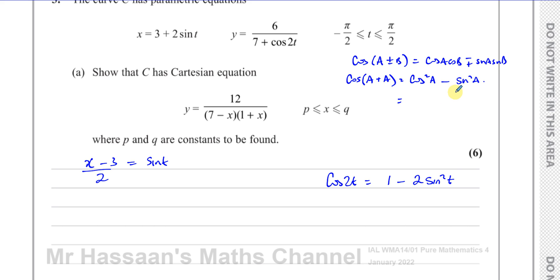And if I want to express this in terms of just sine squared A, I can rewrite cosine squared A as 1 minus sine squared A. That's cosine squared A. And I've got another sine squared A. So this is going to be 1 minus 2 sine squared A. So cosine 2A is equal to 1 minus 2 sine squared A. So that means cosine 2T can be expressed as 1 minus 2 sine squared T.